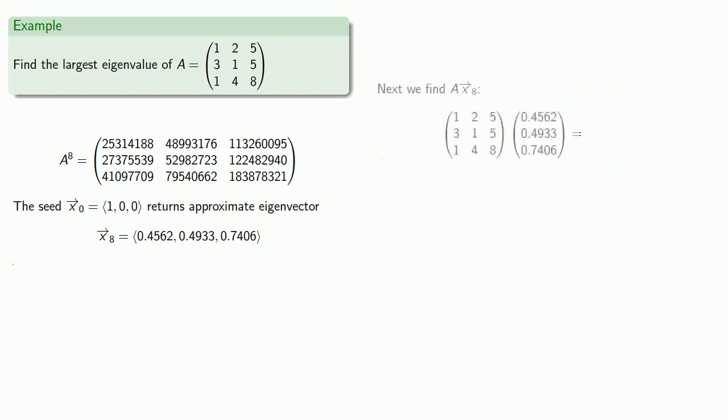Next, we'll find A times x to the 8th. And here's the important thing to remember: we're applying this original matrix A and not this matrix A to the power 8. And if we do that, we'll get a new vector, and our dot product will give us the eigenvalue.